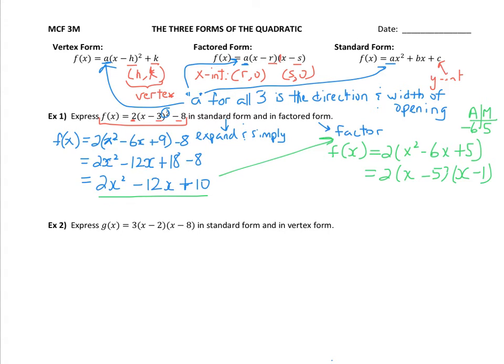Now again, if I wanted to know my x-intercepts, it would be at positive 5 and at positive 1, and that comes from here and here. My y-intercept comes from here, it's 10, and we already talked about the vertex being positive 3 and negative 8.